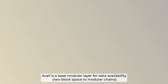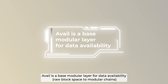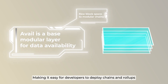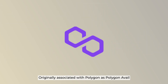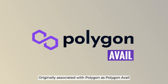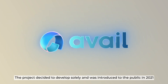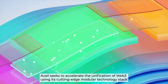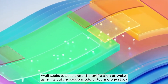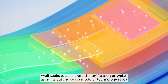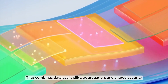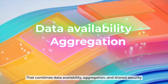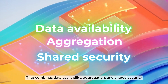Avail is a base modular layer for data availability, making it easy for developers to deploy chains and roll-ups. Originally associated with Polygon and Polygon Avail, the project decided to develop solely and was introduced to the public in 2021. Avail seeks to accelerate the unification of Web3 using a cutting-edge modular technology stack that combines data availability, aggregation, and shared security.